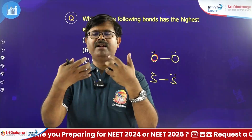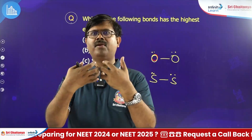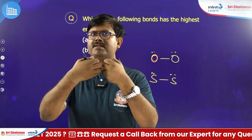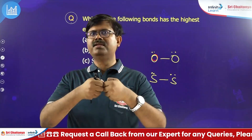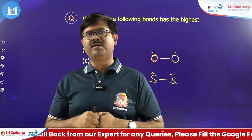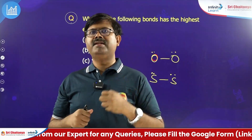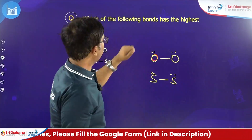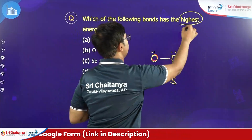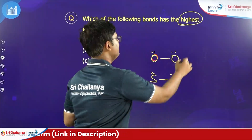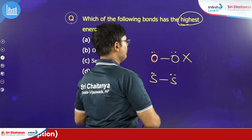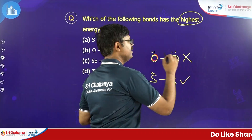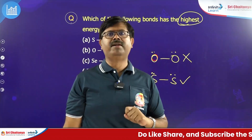Only for second period elements like oxygen-oxygen, the bond length is so small and the atoms are so small that lone pairs are very close and repulsions are very strong. That is why it is unstable and breaks down easily. So the highest bond energy is not for the O-O bond — it is for the S-S bond.